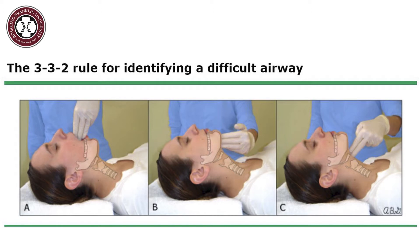If the space is greater than nine centimeters, intubation may also be more challenging because the glottic opening can be too caudal to visualize. The two notes the ability to place two fingers between the thyroid cartilage and the base of the mandible. A rough estimate of the larynx location is obtained via this method. If two fingers cannot fit, the larynx may be too cephalad, so getting a good view of the glottic opening will likely be difficult.